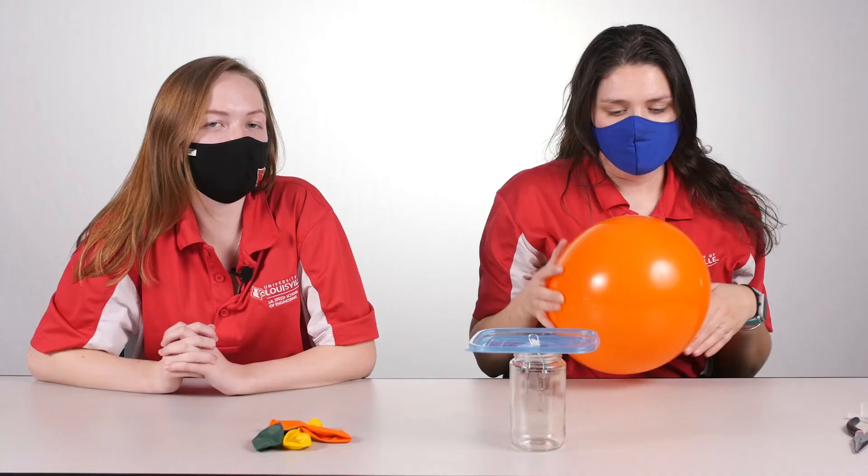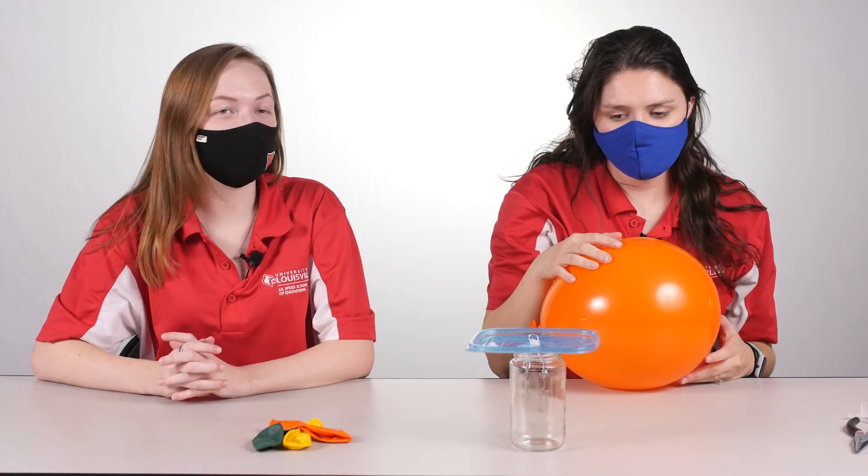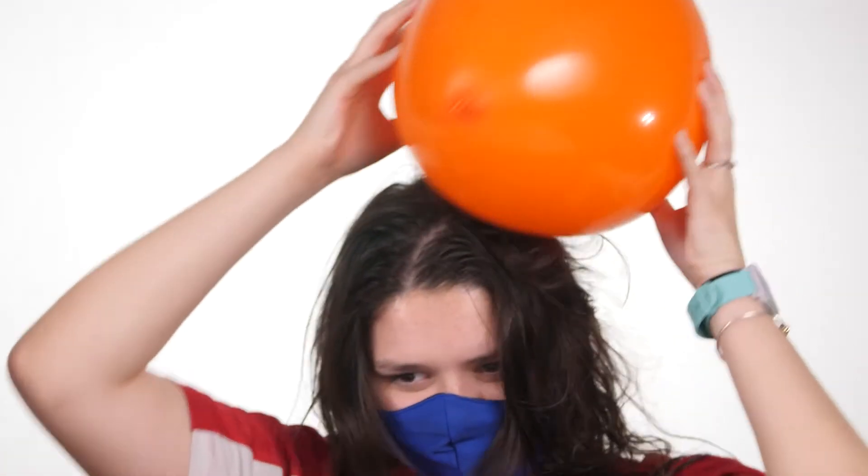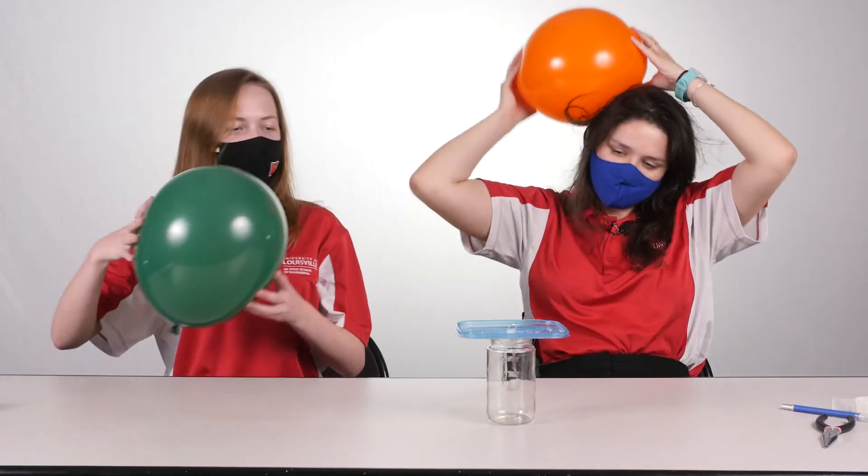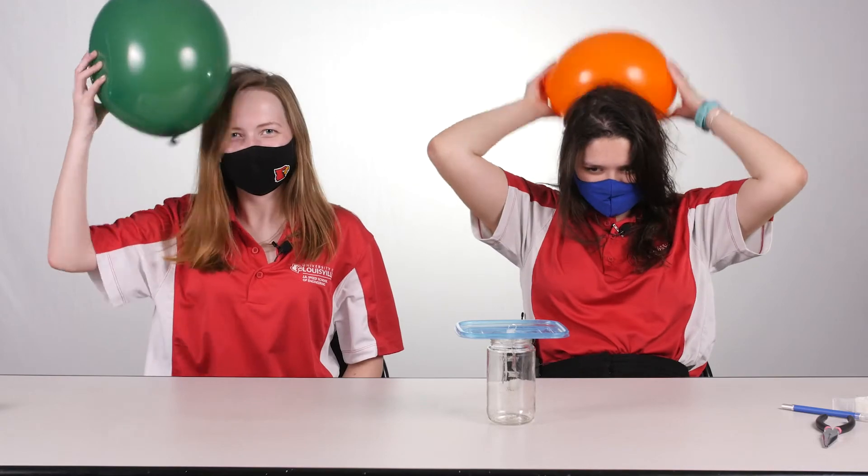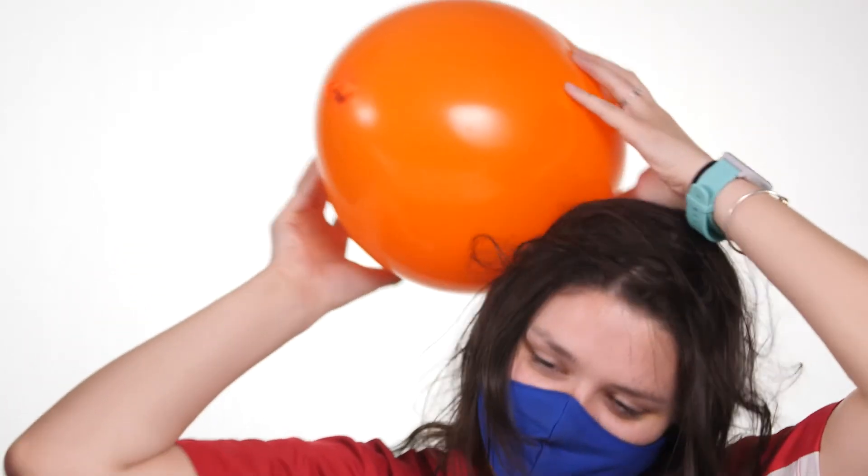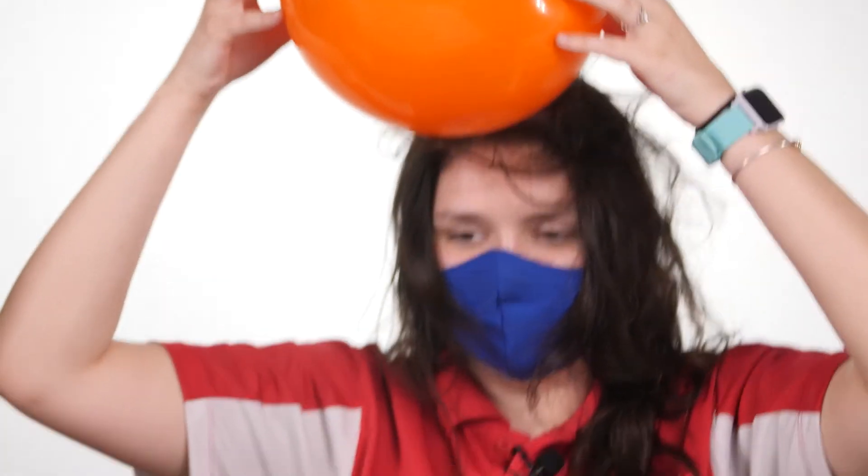So here's where the experiment part comes in. Emery's going to take the balloon and rub it very fast against her hair. The point of this is she's trying to form static electricity. Once she charges the balloon all up on her head, she's going to take the balloon and move it slowly towards the glass jar.